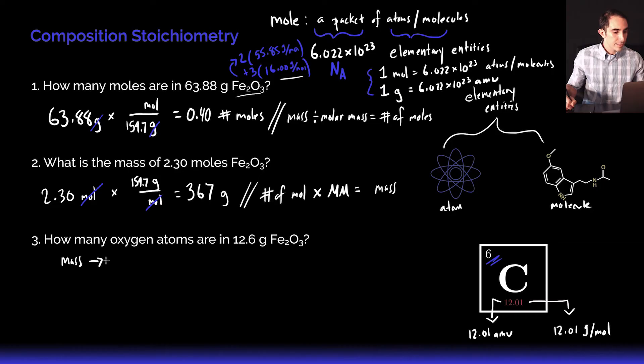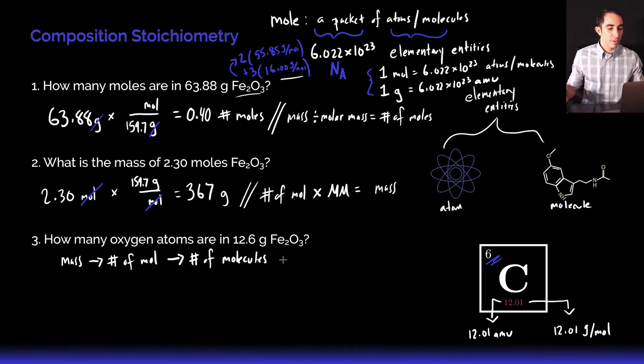There are a few things we have to do along the way. With that mass, we can definitely get to number of moles. With that number of moles, I'm still in that big macroscopic, big picture scale. But I need to zoom down to the atomic scale. The first step is I'm going to get from number of moles to number of molecules. I'm going to be very specific to say that I'm getting the number of molecules of the iron 3 oxide, so Fe₂O₃.